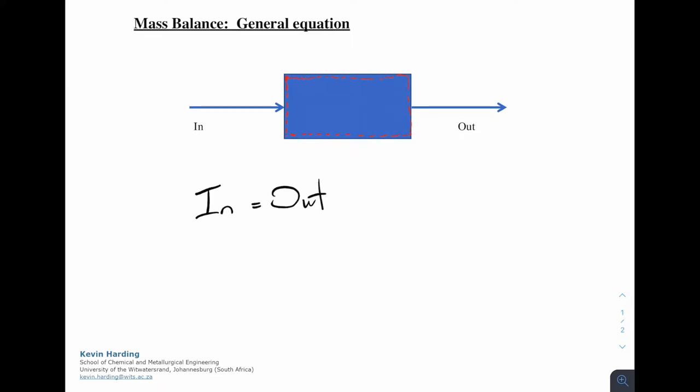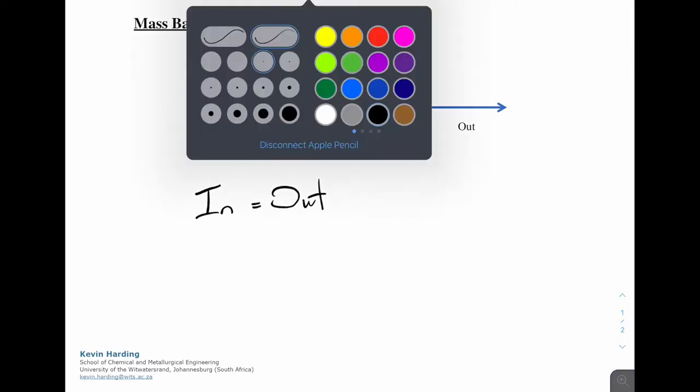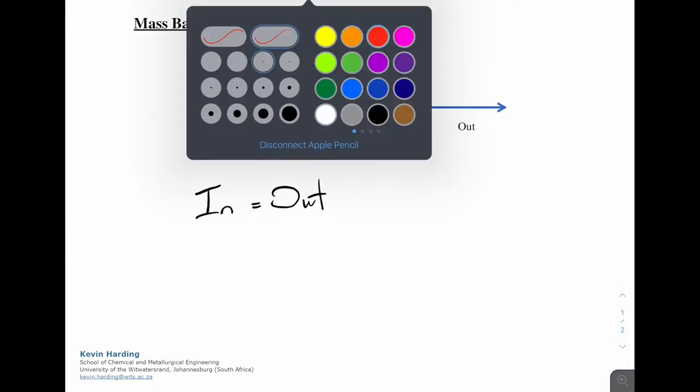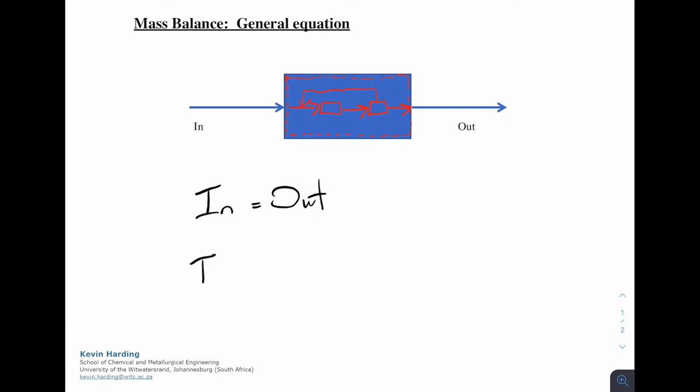However, it was possible to have some sort of generation or consumption in the system. The way that might have happened is that our in-term might have been a mixture of different chemicals. When we come in, we have a reacting unit, then a separation unit of sorts, we might have a purge or not, we have recycle, and then we come out. So if we have that sort of system, we could have had a generation term.